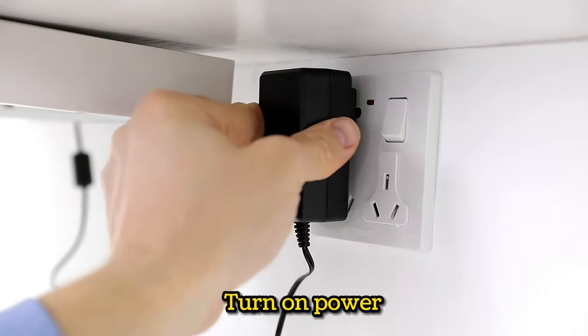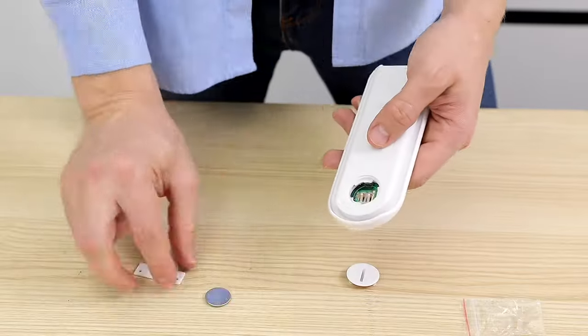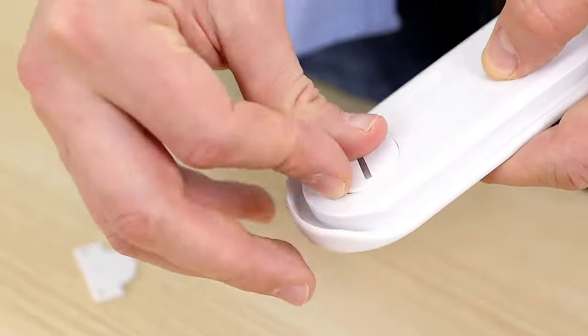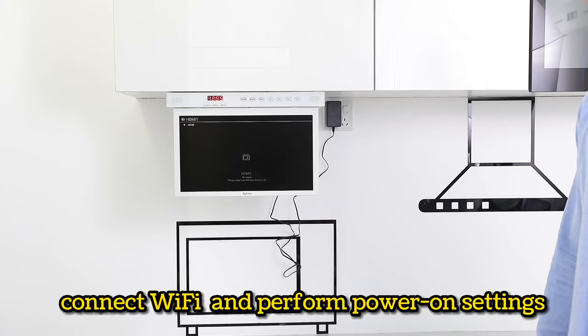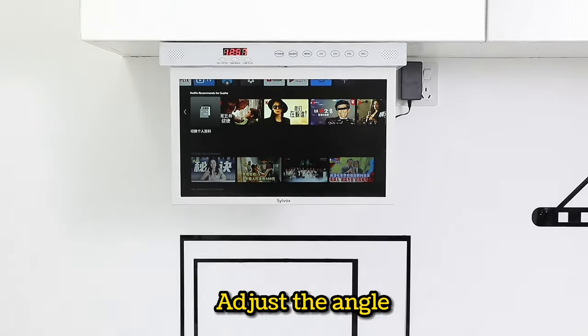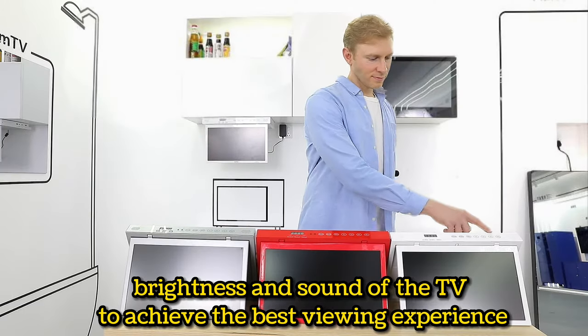Turn on power. Connect Wi-Fi and perform power-on settings. Adjust the angle, brightness, and sound of the TV to achieve the best viewing experience.